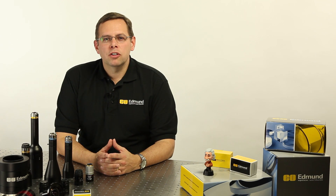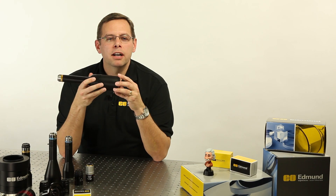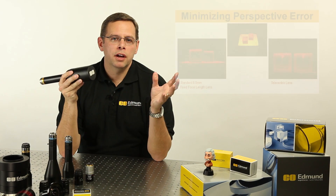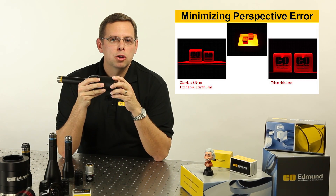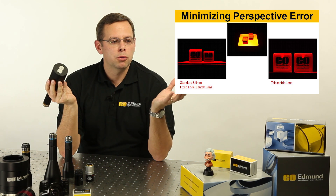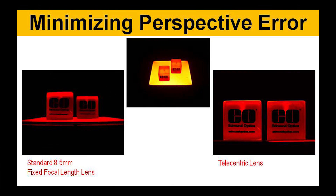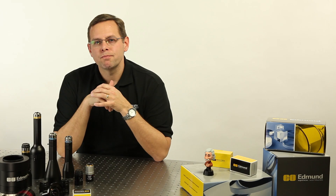The telecentric lens in general, like one of these here, is actually designed to not have any sort of angular field of view associated with it. Most standard lenses have some sort of angular field of view associated with them, and that's why we can see larger objects at further distances away and smaller objects at closer distances. With a telecentric lens, we actually maintain magnification as the distance either increases or decreases in relation to the lens.